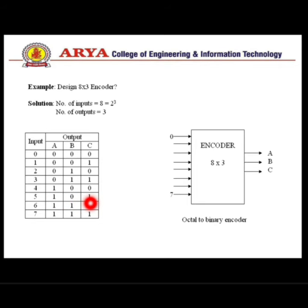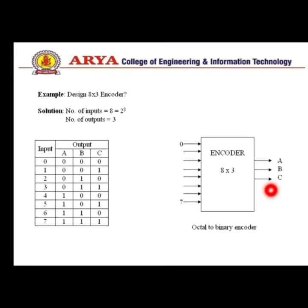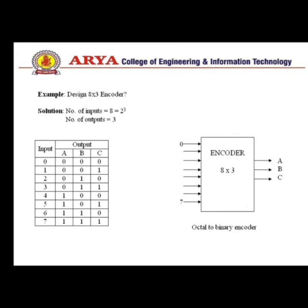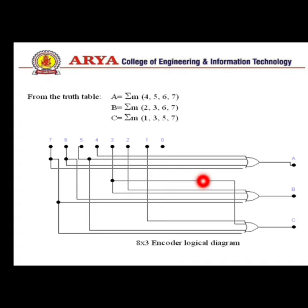This is represented in minterm form. The block diagram for the octal-to-binary encoder shows inputs 0 to 7 and outputs A, B, C. Next we look at the circuit diagram for this encoder.